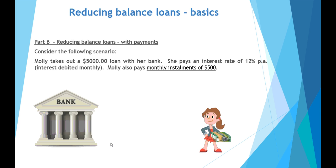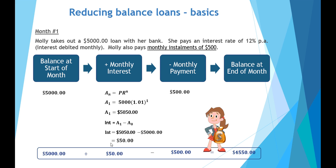In the second part, let's consider the same arrangement: a $5,000 loan at 12% per annum, interest debited monthly. However, in this scenario Molly makes monthly installments of $500. In month one, Molly will pay $500 to the bank. She starts with a balance of $5,000 owing. Using our equation, $5,000 multiplied by the growth factor of 1.01 gives $5,050 — she's been charged $50 interest. After that interest is added, Molly makes a payment of $500, leaving an end-of-month balance of $4,550.